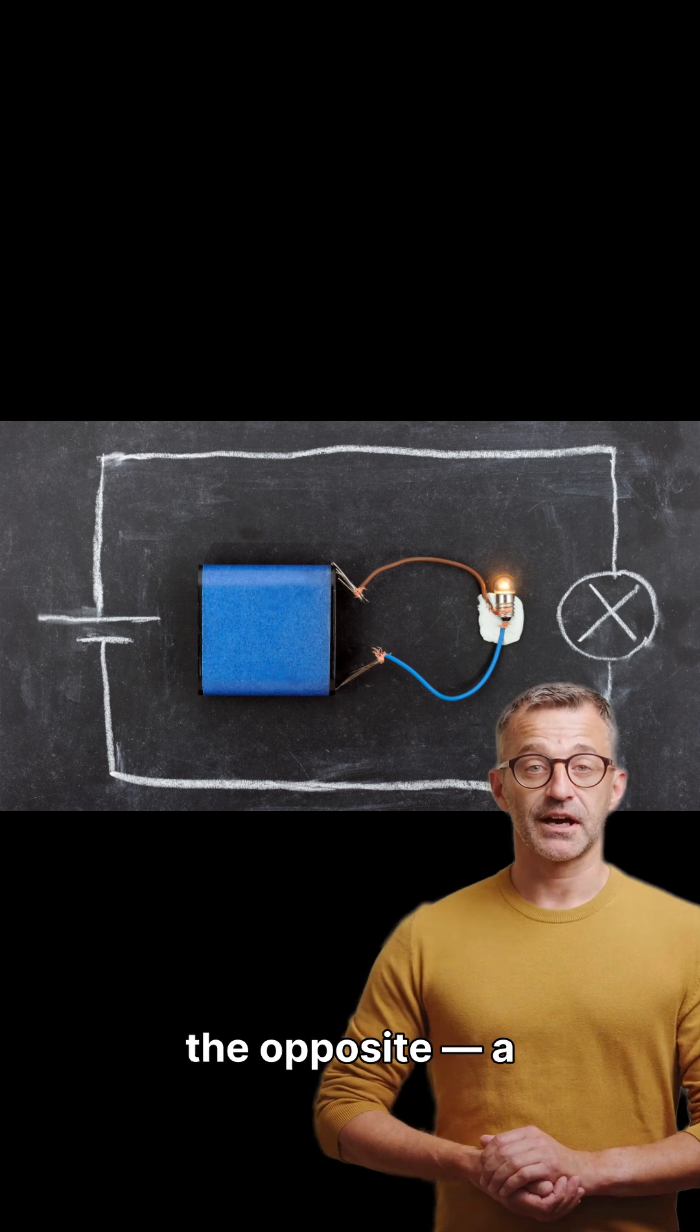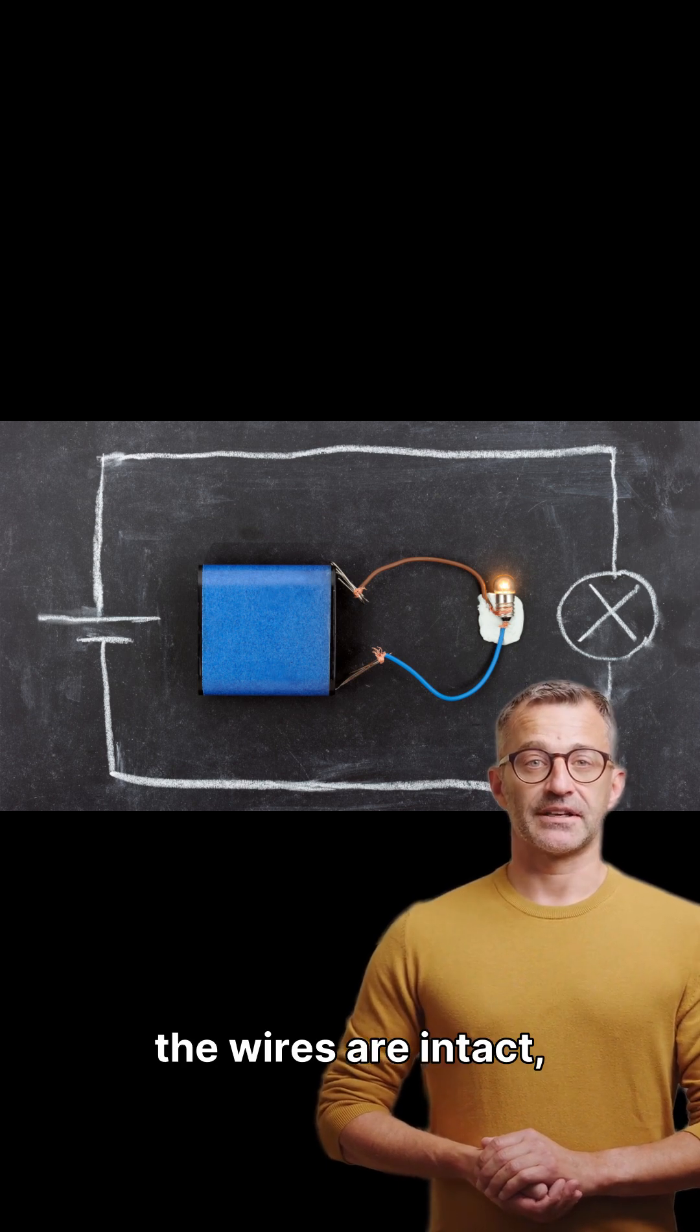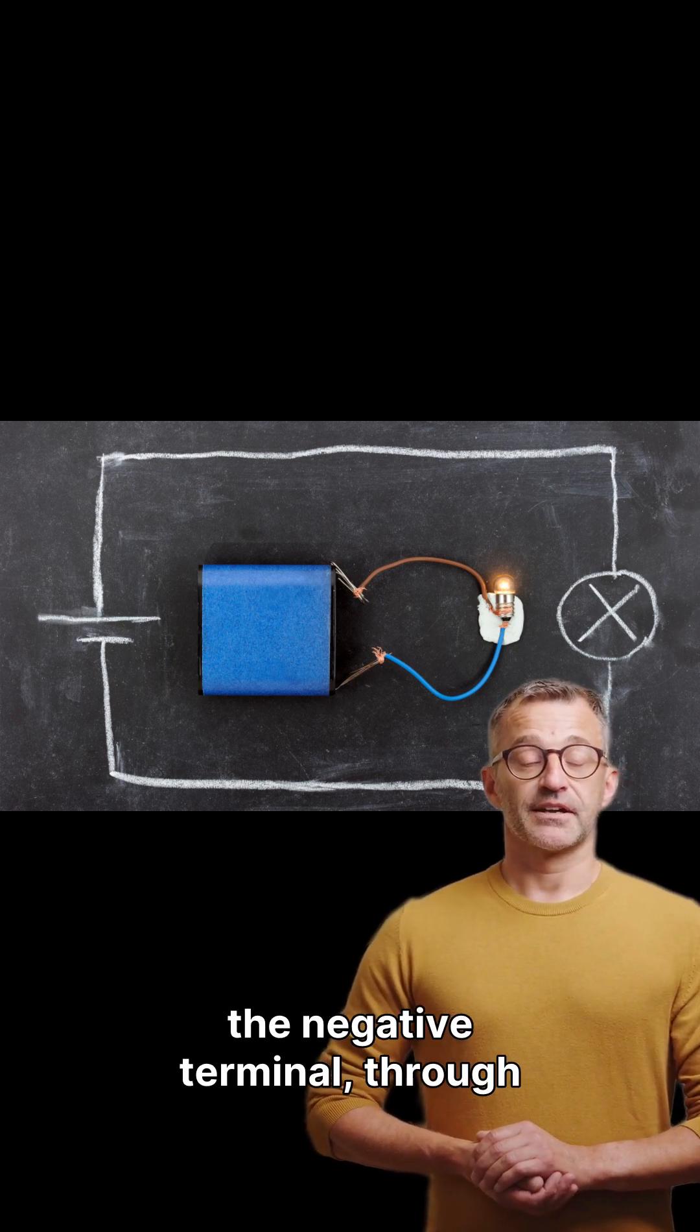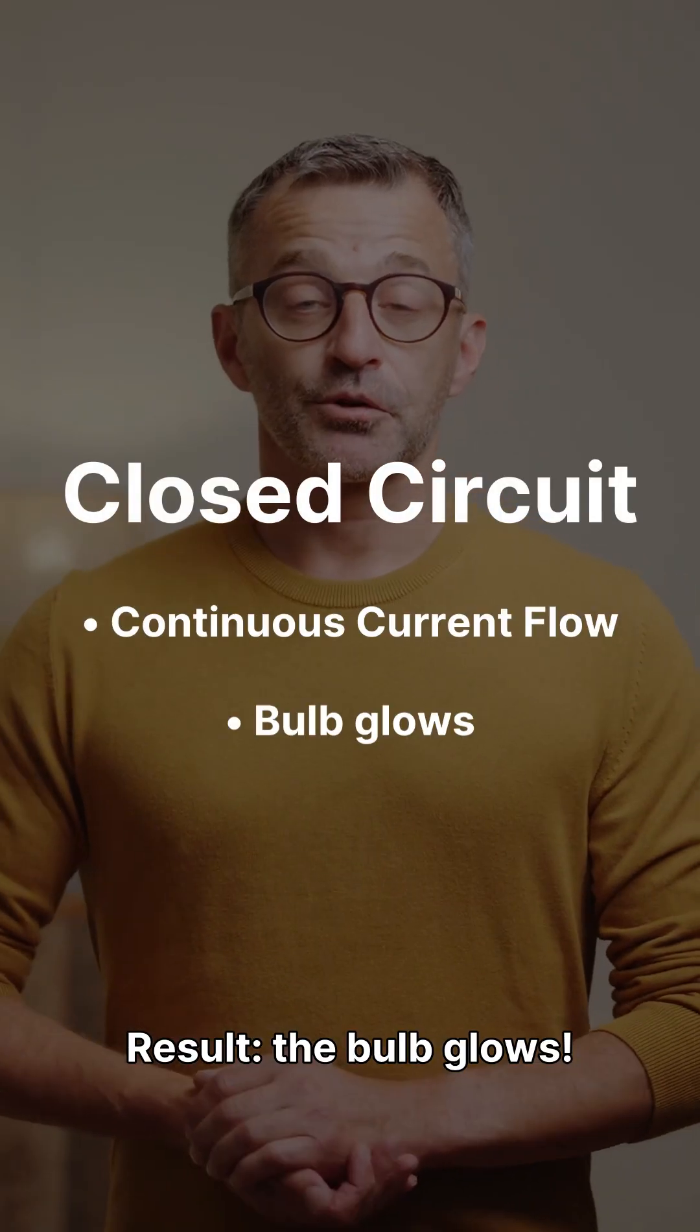A closed circuit is the opposite—a complete path for current. The switch is on, the wires are intact, and electricity flows from the negative terminal, through the bulb, and back to the positive terminal. Result: the bulb glows.